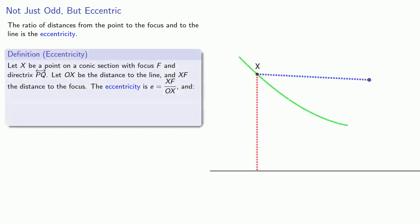So, let x be a point on a conic section with focus f and directrix pq. Let ox be the distance to the line, and xf the distance to the focus. The eccentricity is xf divided by ox, the distance to the focus, divided by the distance to the line.